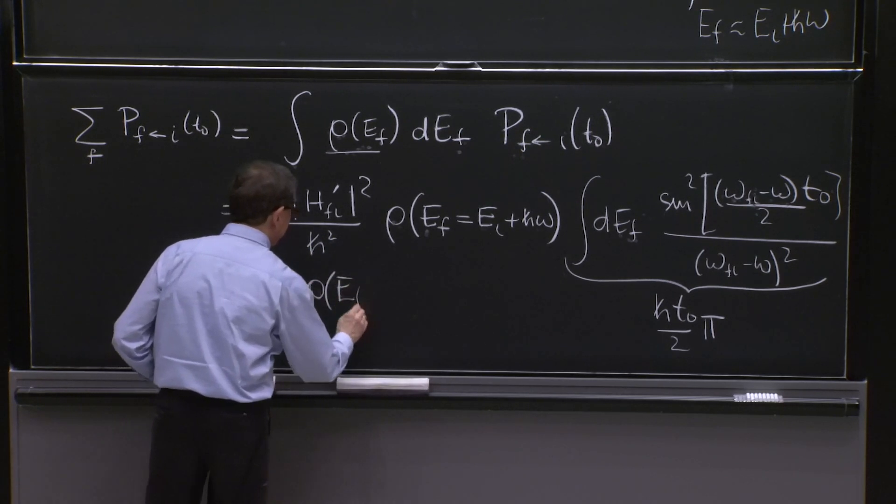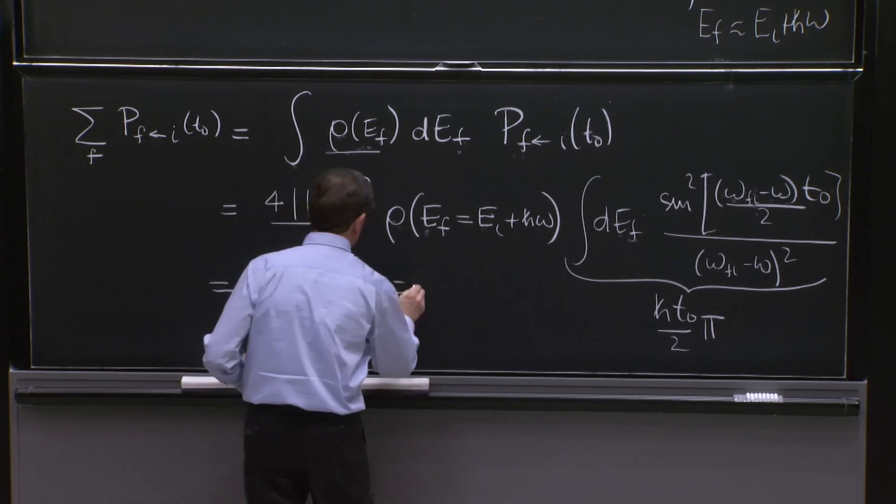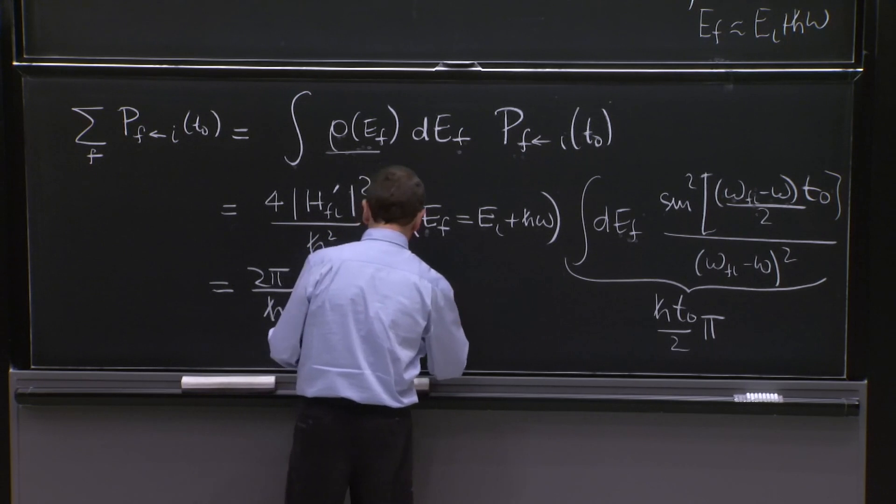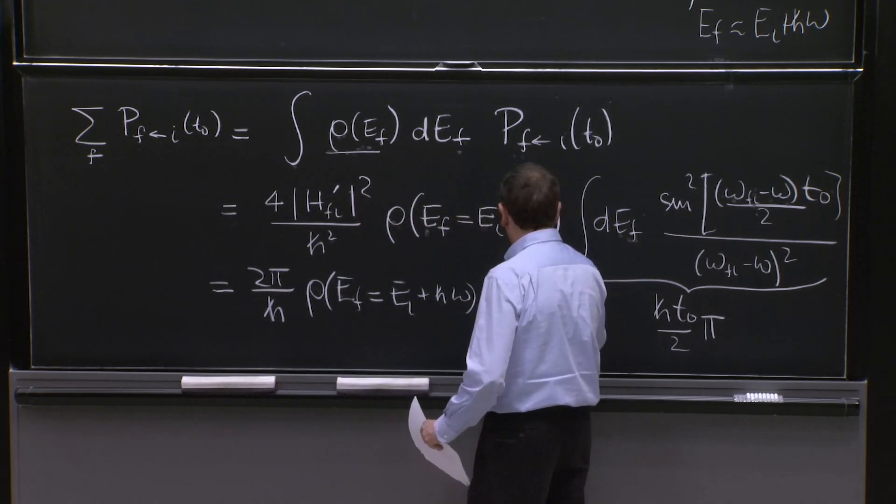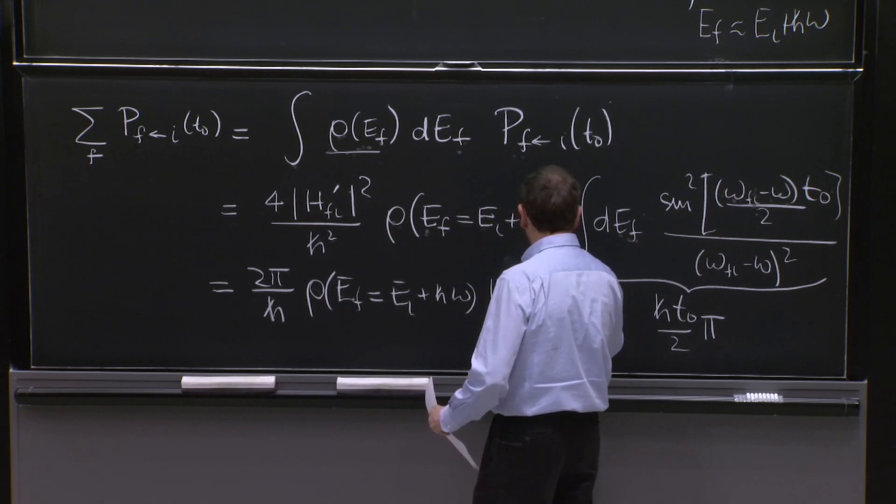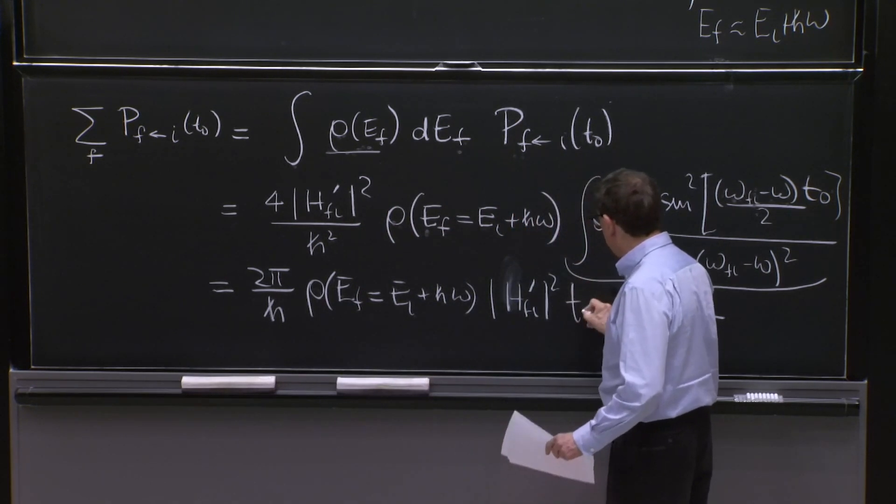So with this result in there, the whole answer here is 2 pi over h bar, h bar only because 1 h bar cancels indeed.